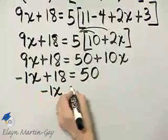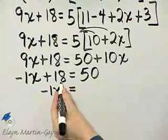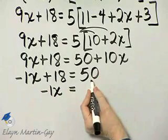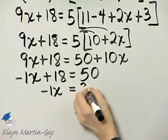Then I will subtract 18 from both sides, and go ahead and write that step down if you need to, but if I subtract 18 on the left side, I have negative 1x or negative x. If I subtract 18 on the right side, I have 32.